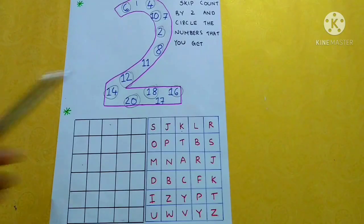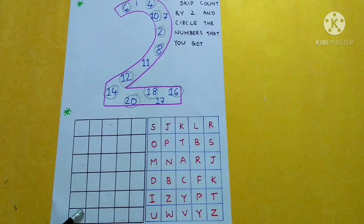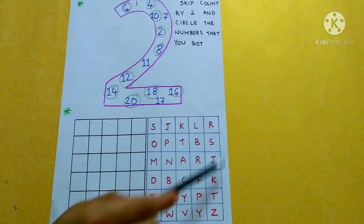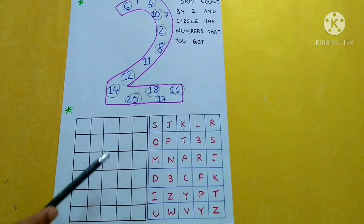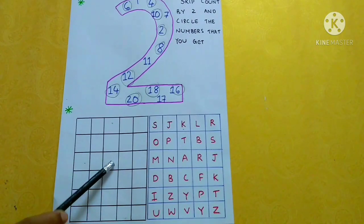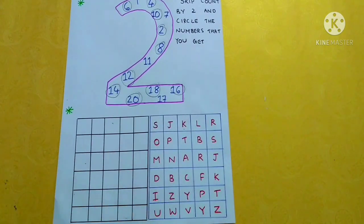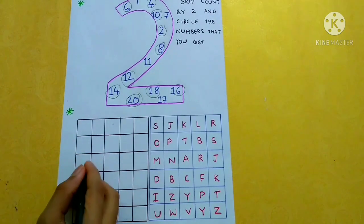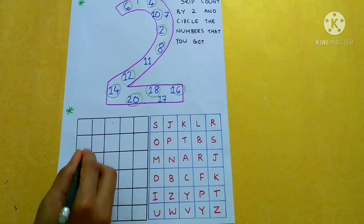In this activity, we have to draw an equal number of squares in both the boxes. And now we have to draw a pattern like this.